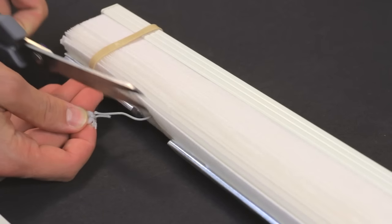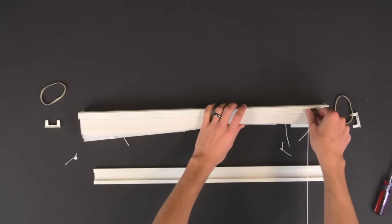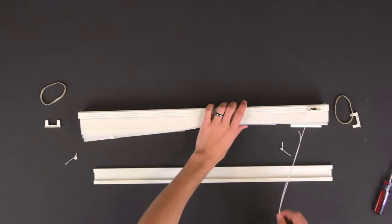Cut the lift strings, saving any washers for reuse. Then pull the old strings out of the shade and discard.